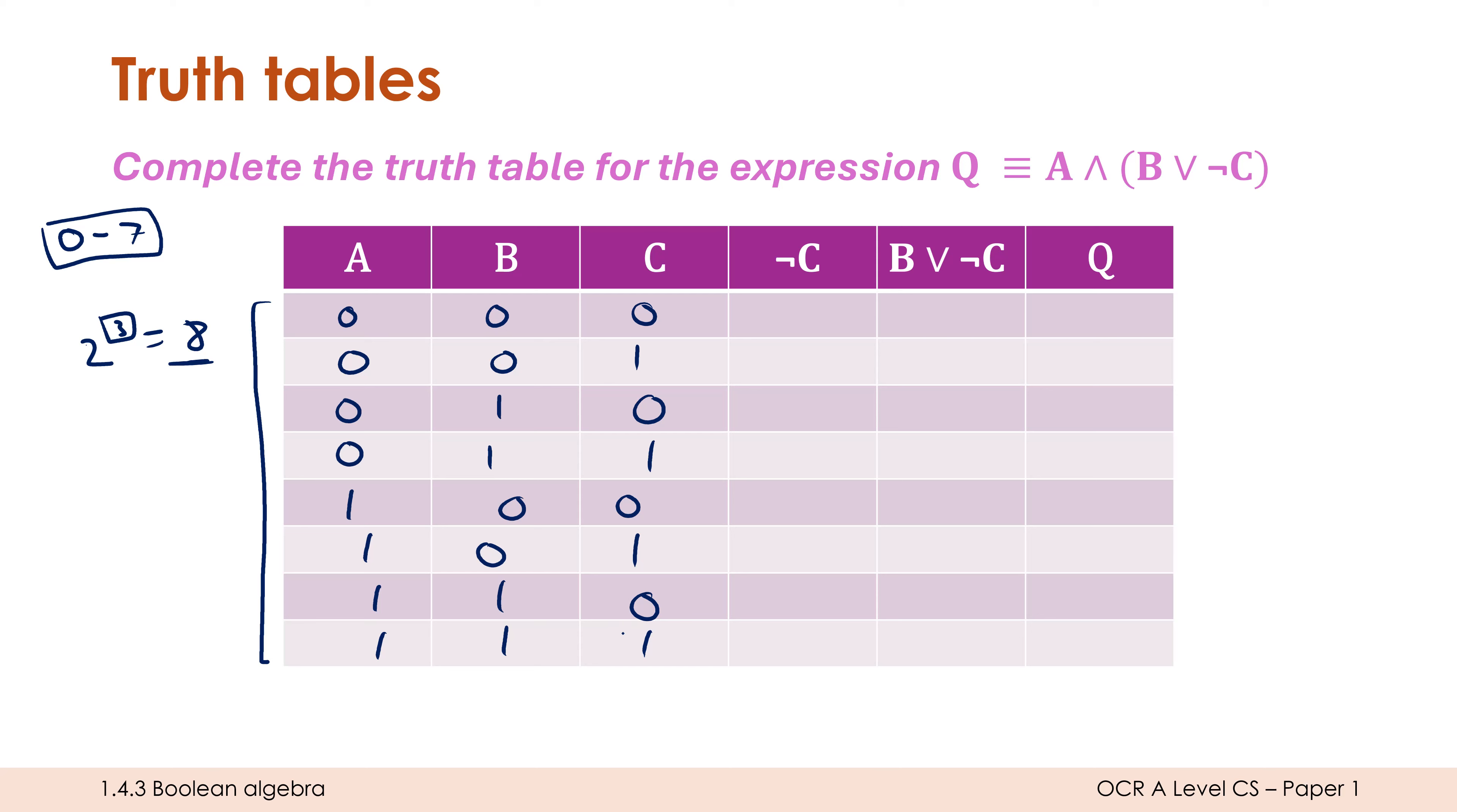So doing it in a systematic way guarantees you will get every combination represented. This is how mark schemes will be expecting you to do it. You can in theory not do it this way, but it'll be a massive headache for the person marking it. Please, please, please count upwards in binary.